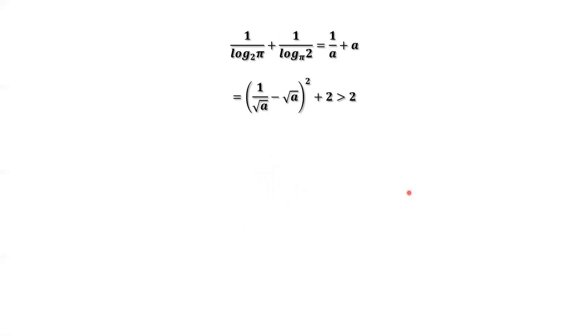Here, we are going to use basic algebra. 1 over square root of A minus square root of A, then square, equals the first term squared, which is 1 over A, plus the last term squared, which is A, minus the crossing term, which is 2 times 1 over square root of A times square root of A, which is 2.